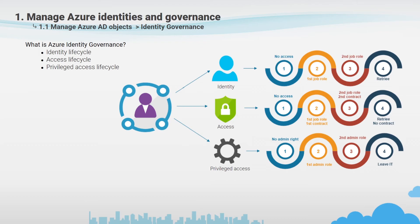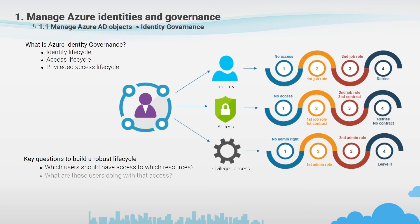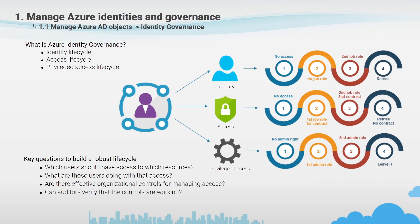The three lifecycles we have discussed are intended to help organizations address four key questions: Which users should have access to which resources? What are those users doing with that access? Do you have effective organizational controls for managing access? Can auditors verify that the controls are working?